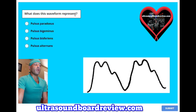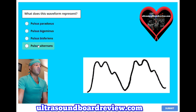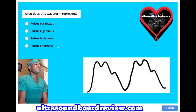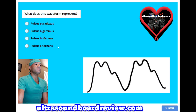What does this waveform represent? A, pulsus paradoxus; B, pulsus bigeminis; C, pulsus bisferiens; or D, pulsus alternans? The answer is C, pulsus bisferiens.